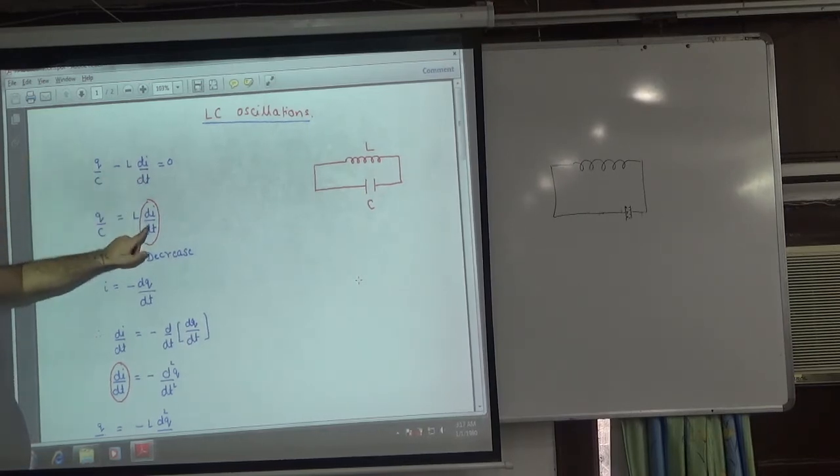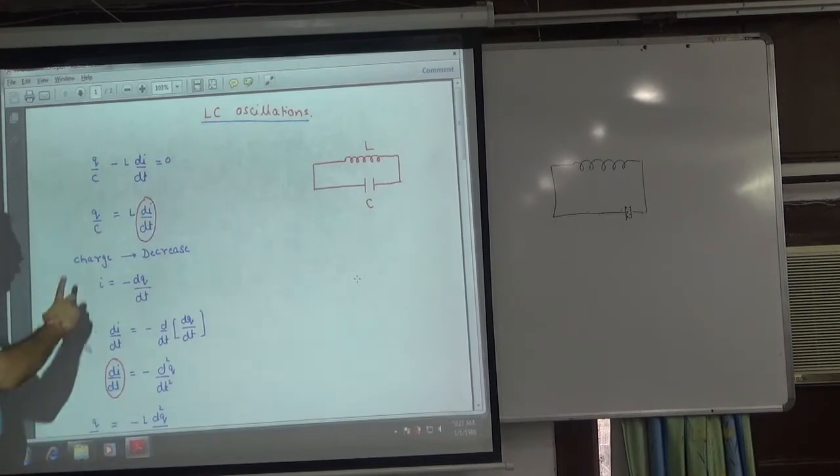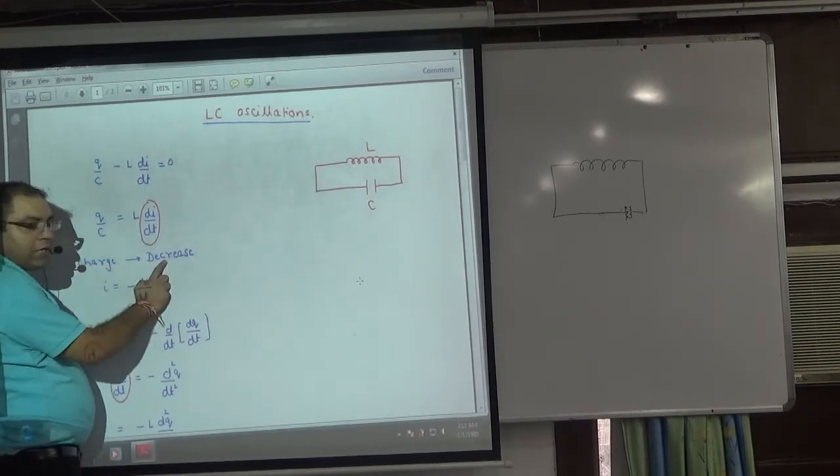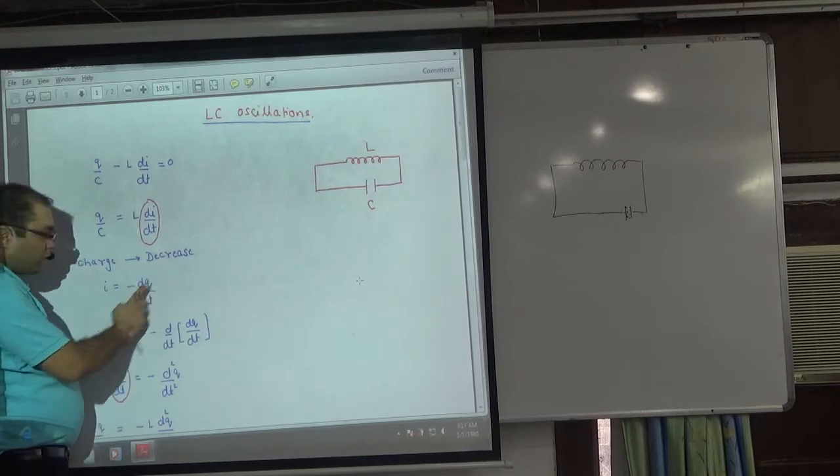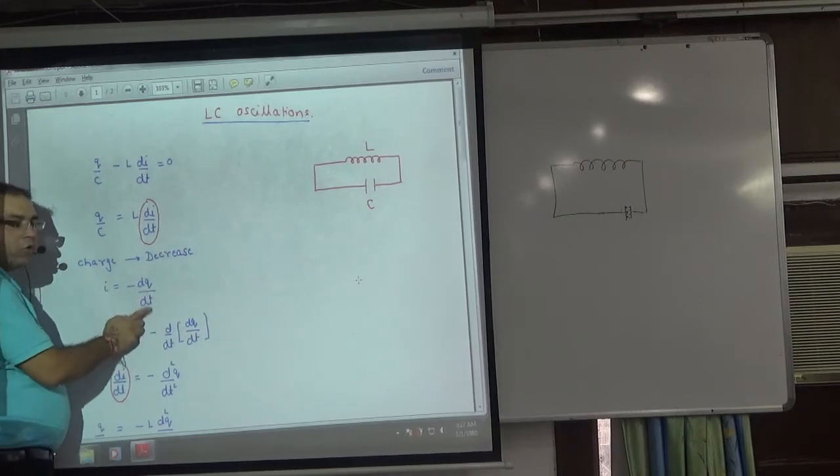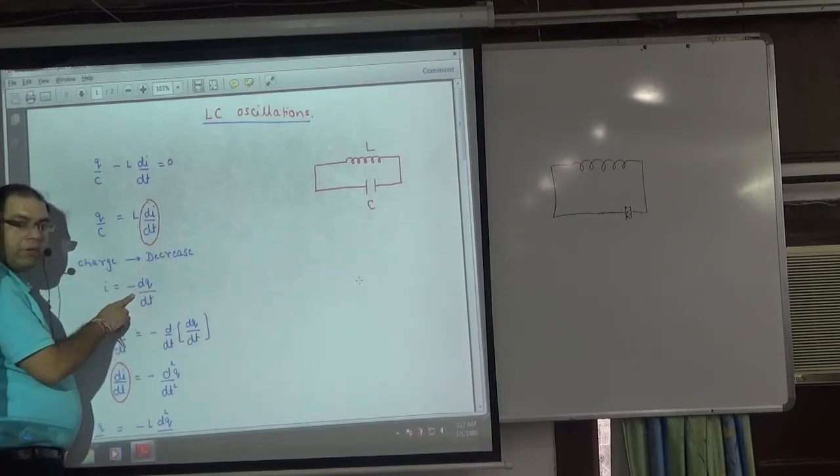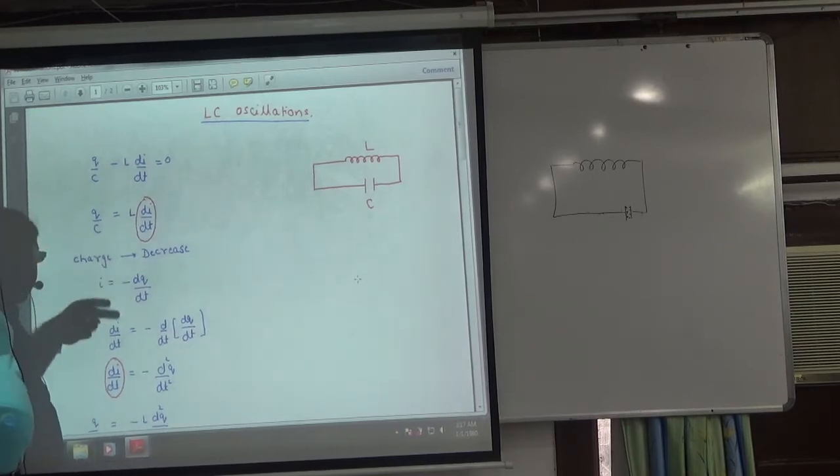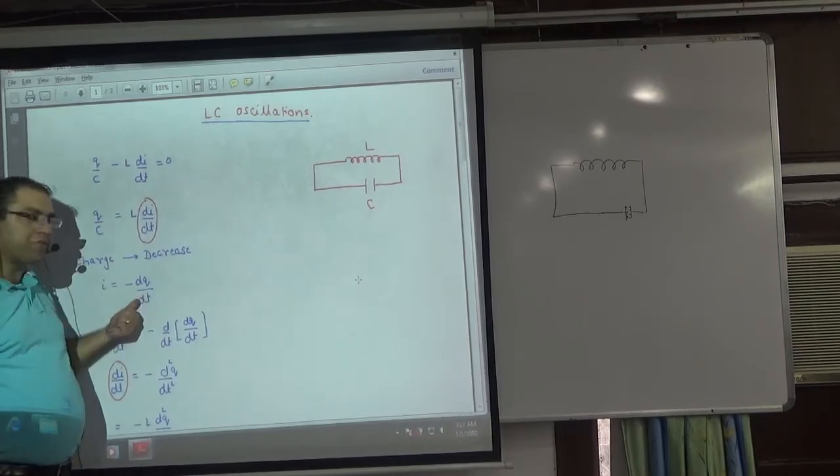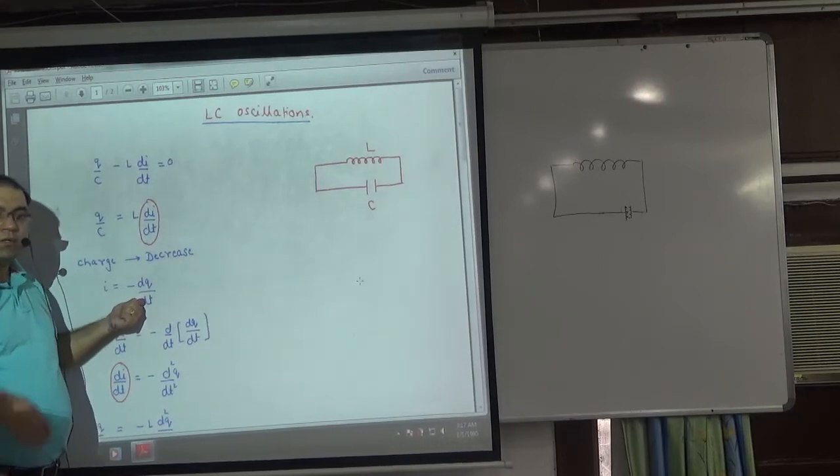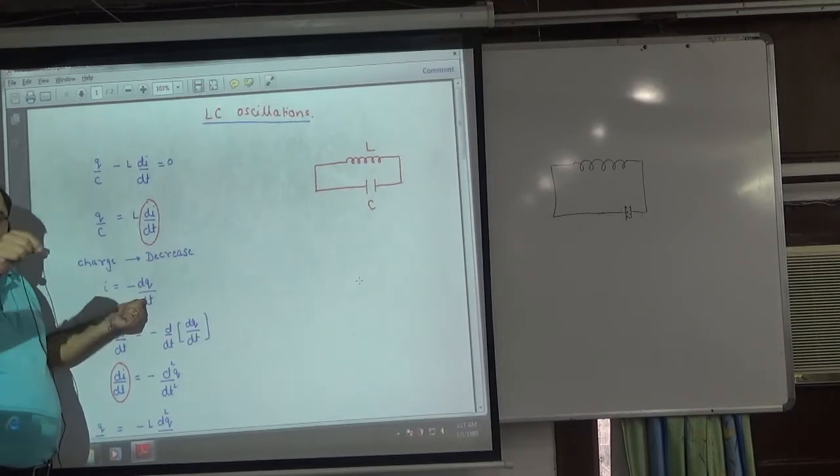We took it on the right side, di by dt. Current is DQ by dt with negative sign. Because when charge increases, there is a positive rate of change of charge. When it is empty, the sign is negative.